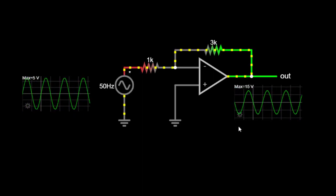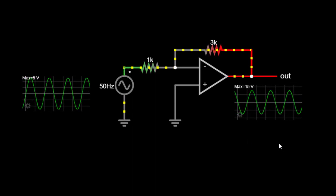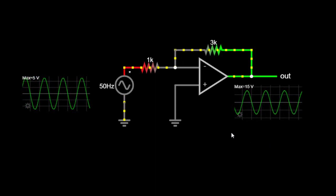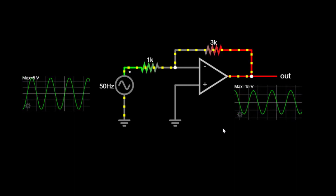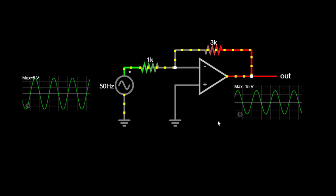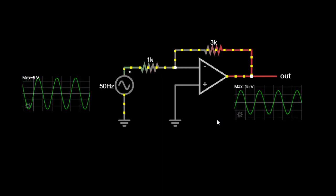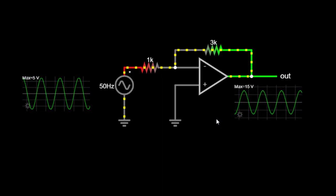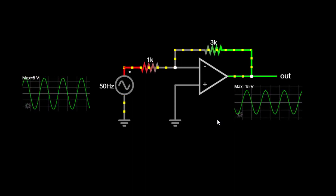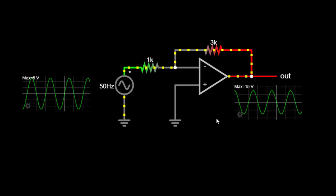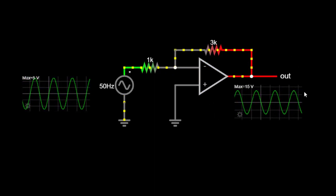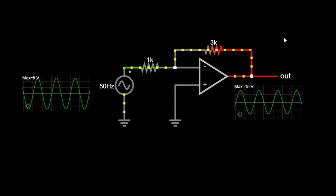The inverting amplifier is a fundamental building block in electronics and provides us with the ability to amplify and invert signals. By using the circuit simulator, we were able to visualize how the inverting amplifier configuration works, understanding the role of the OPAMP, the feedback resistor, and the input resistor. I hope this demonstration has helped you understand the concept of an inverting amplifier.